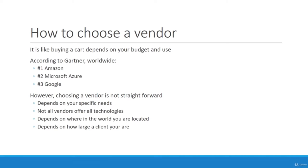How do you choose a vendor with so many options? It's like buying a car — it depends on how much you can afford and how you're going to use it, because each cloud vendor has their own specialty, pricing, and preference for certain clients. According to Gartner — a worldwide research firm that publishes Magic Quadrant reports on vendor positioning — Amazon is the number one cloud vendor worldwide, but also the most expensive.